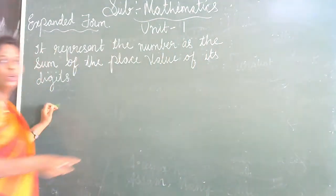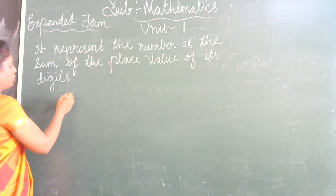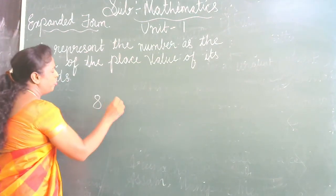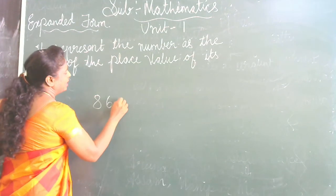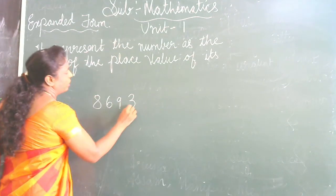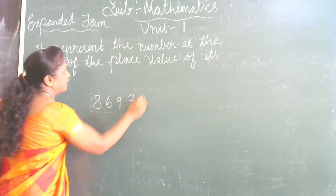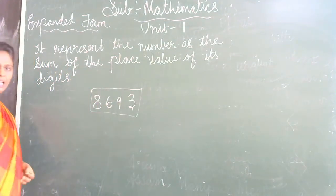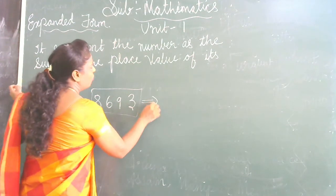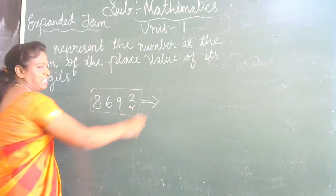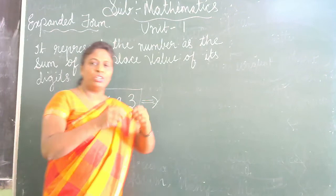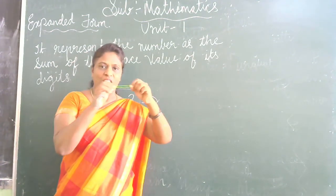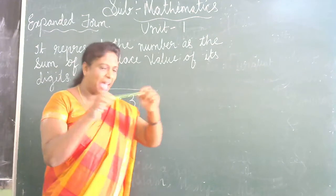For example, I will give you a number. If you take 8, 6, 9, 3 — this is a 4-digit number. So now what we are going to do is we are going to expand it. We are going to make it bigger — expand it.